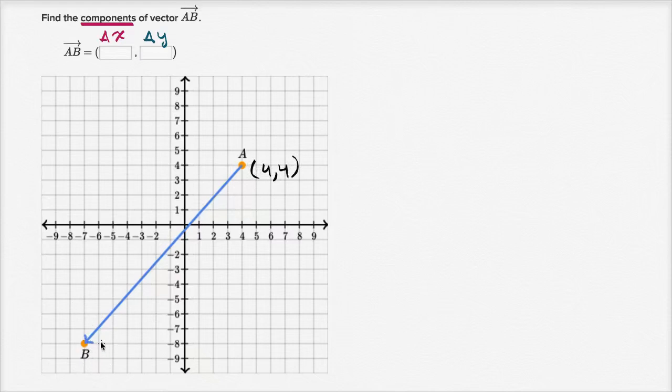And then point B, its coordinates are negative seven comma negative eight. So let's first think about what our change in x is. And like always, I encourage you to pause the video and try to work through it on your own.